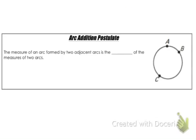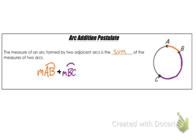In the arc addition postulate, the measure of an arc formed by two adjacent arcs is the sum of the measures of the two arcs. So in the circle to the right, the measure of arc AB, which is a minor arc, plus the measure of arc BC is equal to the measure of the whole combined arc, which would be the measure of arc ABC.